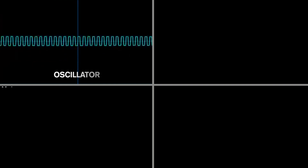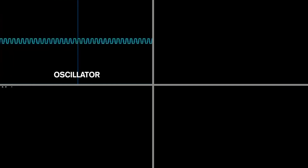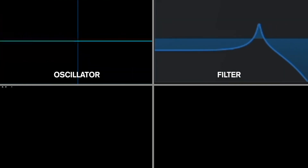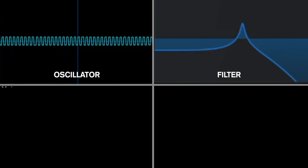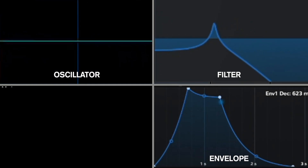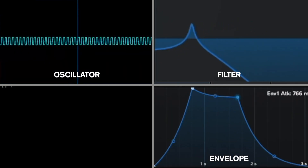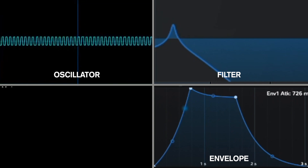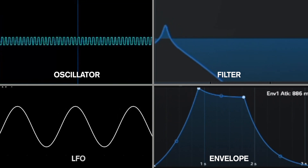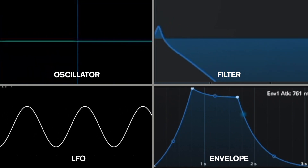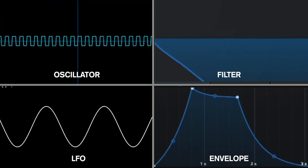Oscillators, filters, envelopes, and LFOs are four main components of what comprises a synthesized sound. An oscillator generates a pitch. A filter shapes the frequency spectrum of that pitch. An envelope controls how quickly a parameter sounds upon being triggered and how long it takes for it to decay. And an LFO is one method by which we can modulate the parameters of our sound.